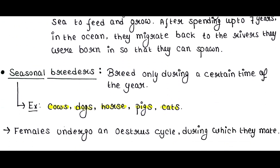Next is seasonal breeders. Some animals are seasonal breeders, meaning they breed only during a certain time of the year if conditions are favourable. Examples include cows, dogs, horses, pigs, and cats. The females of these animals undergo an estrus cycle during which they mate.